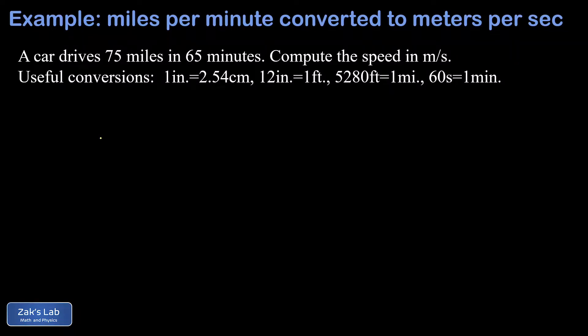In this video we're looking at a unit conversion for the speed of a car. We're given that the car travels 75 miles in 65 minutes, and our goal is to convert to meters per second.